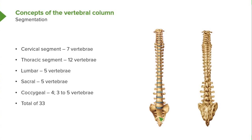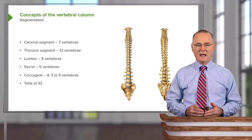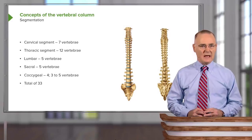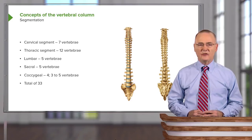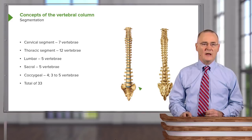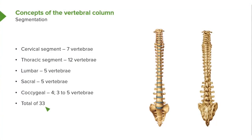The next segment is the sacrum, which in the adult form is made up of five fused vertebrae. Lastly, we have the coccyx. Coccygeal vertebrae typically number four, though there is some anatomic variability — you may have three or as many as five. Sticking with four, if we add 7, 12, 5, 5, and 4, we have 33 vertebrae within the vertebral column.